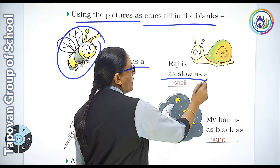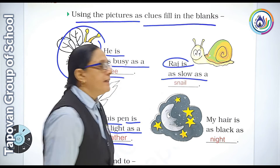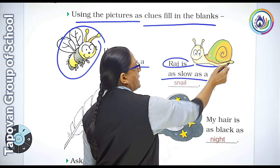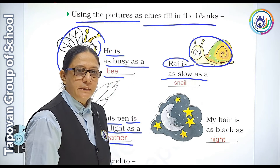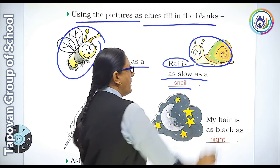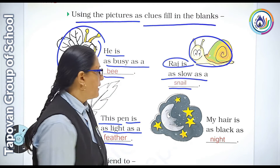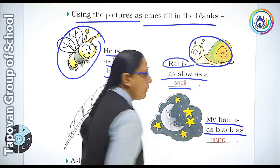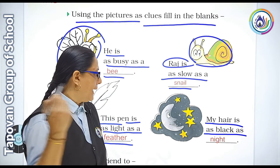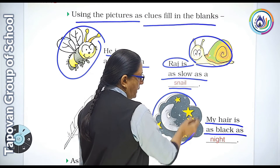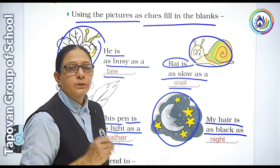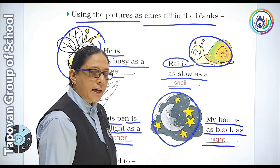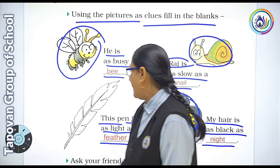Raja is as slow as a snail — S-N-A-I-L, snail. My hair is as black as night — N-I-G-H-T, night.